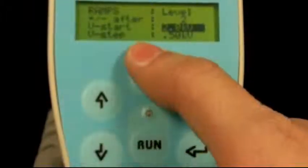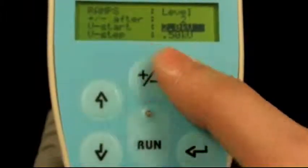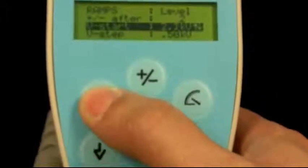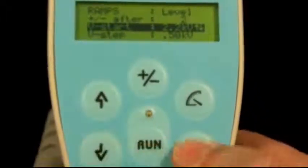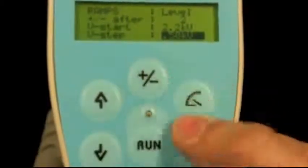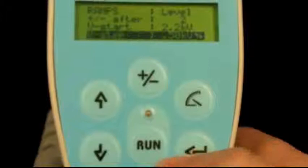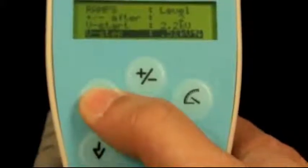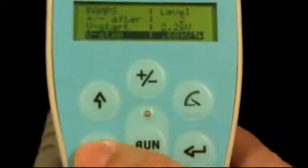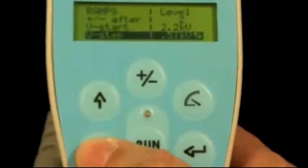If you want to change the start voltage, you hit enter and use the up and down arrow keys to select the voltage you want to start at. The step function is the same way. Arrow down, hit enter, and with the arrow keys you can select how quickly or the amount you want to increase the voltage.